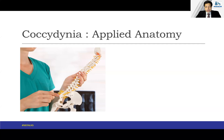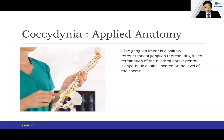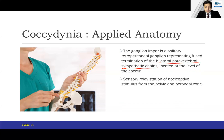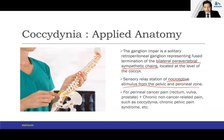If you study the applied anatomy, the ganglion impar is a solitary retroperitoneal ganglion which represents the fused termination of the paravertebral sympathetic chains, and it is located at the level of the coccyx. In addition, it is the sensory relay station of nociceptive stimuli from the pelvic and perineal zone. For perineal cancer pain arising from the rectum, vulva, and prostate, as well as chronic non-cancer-related pain such as coccydynia and chronic pelvic pain syndrome, this is a very important target.